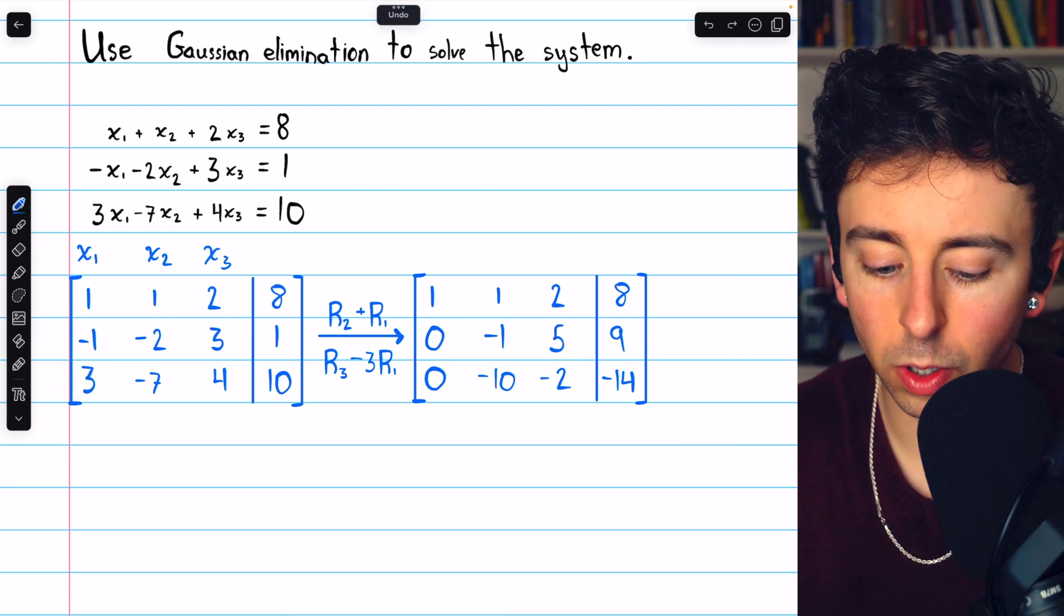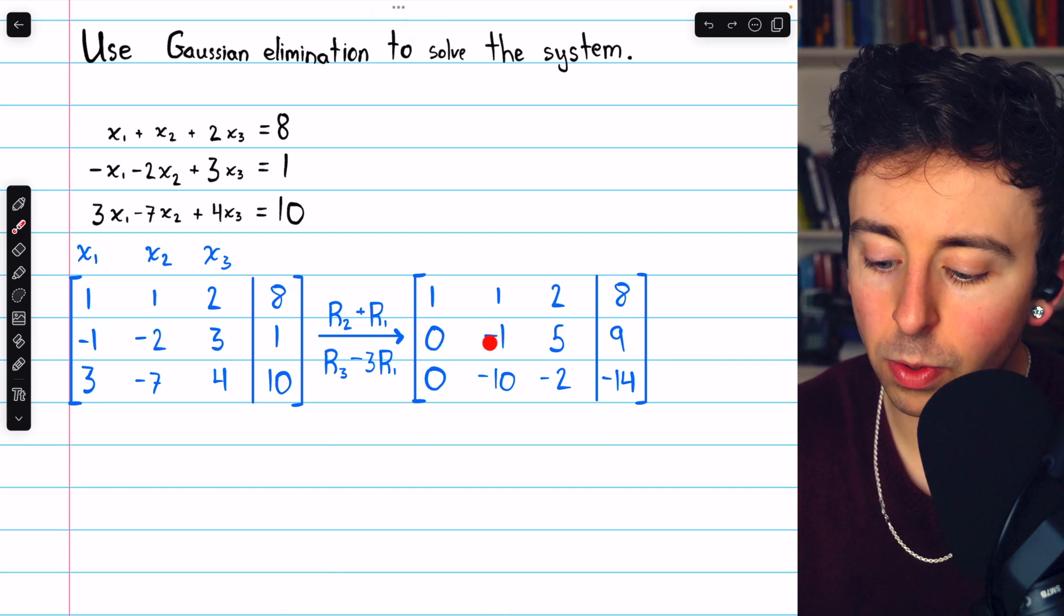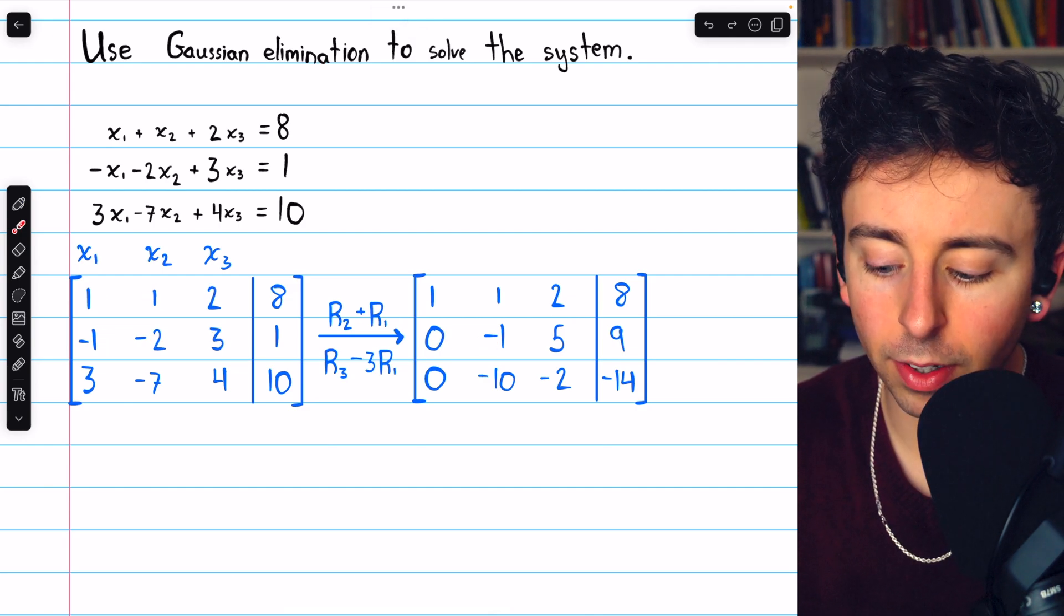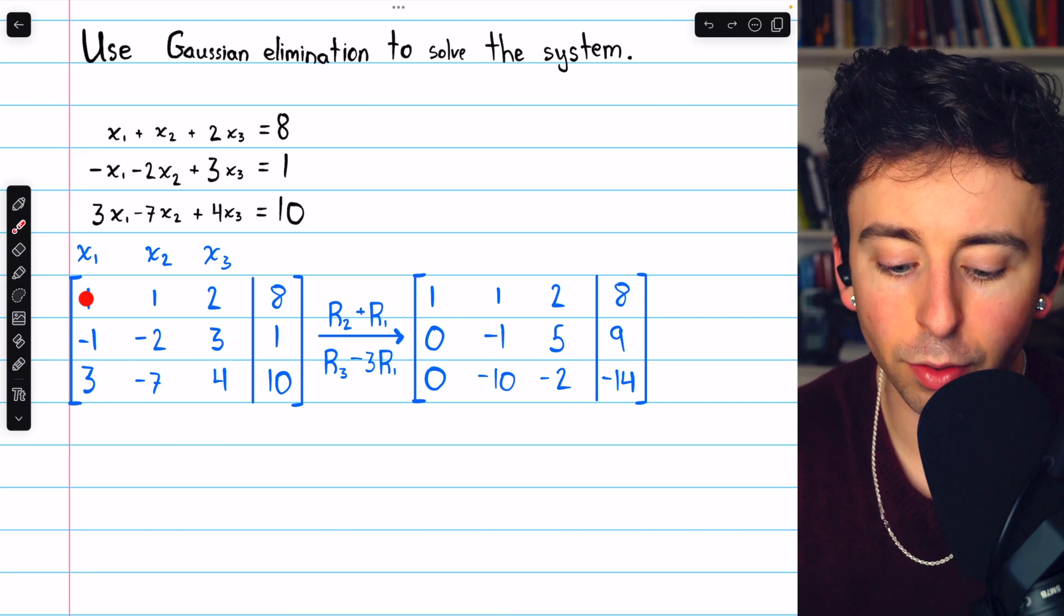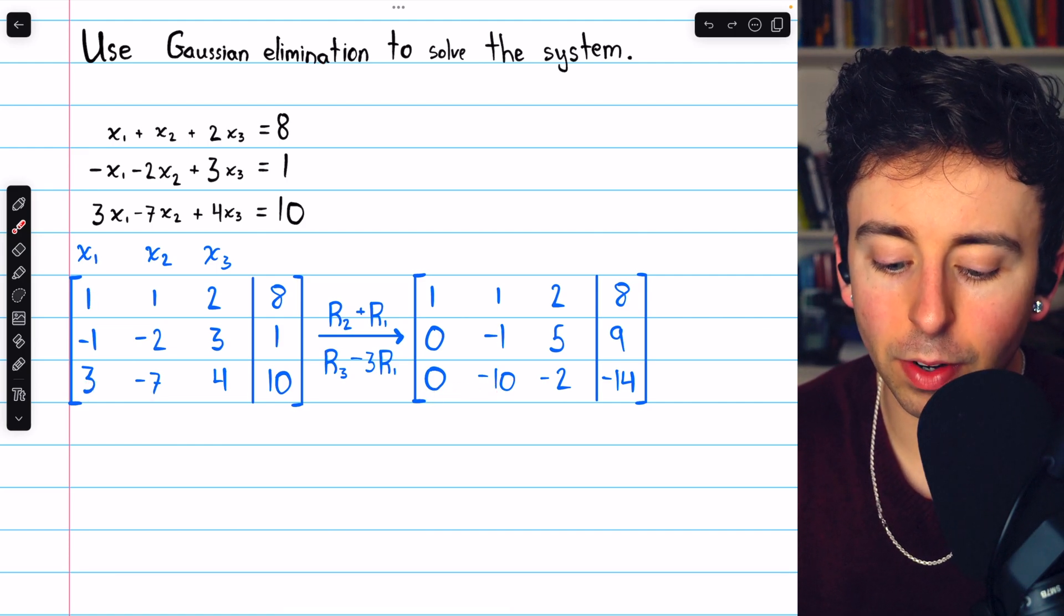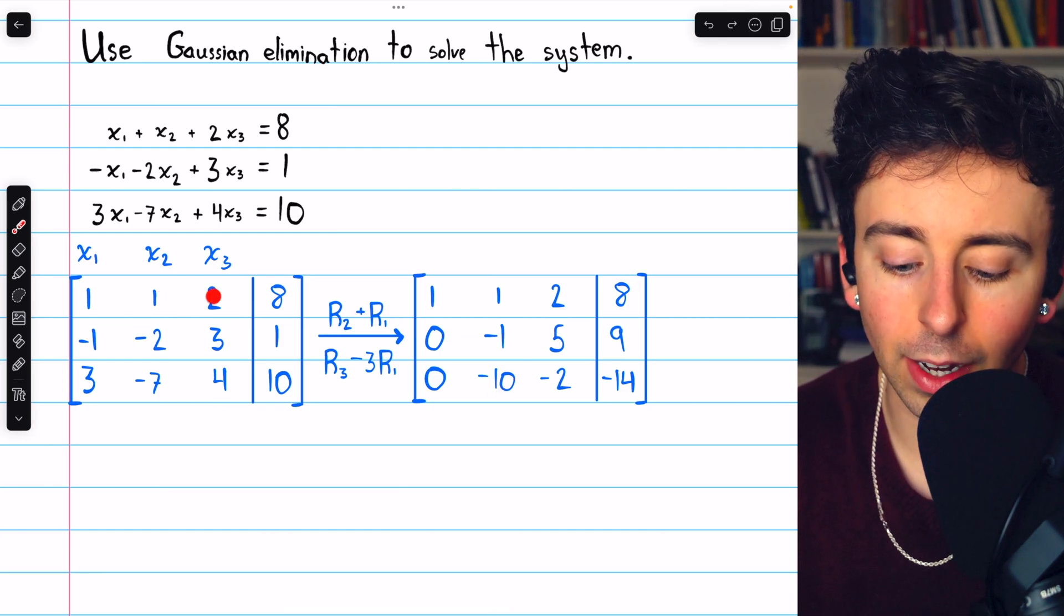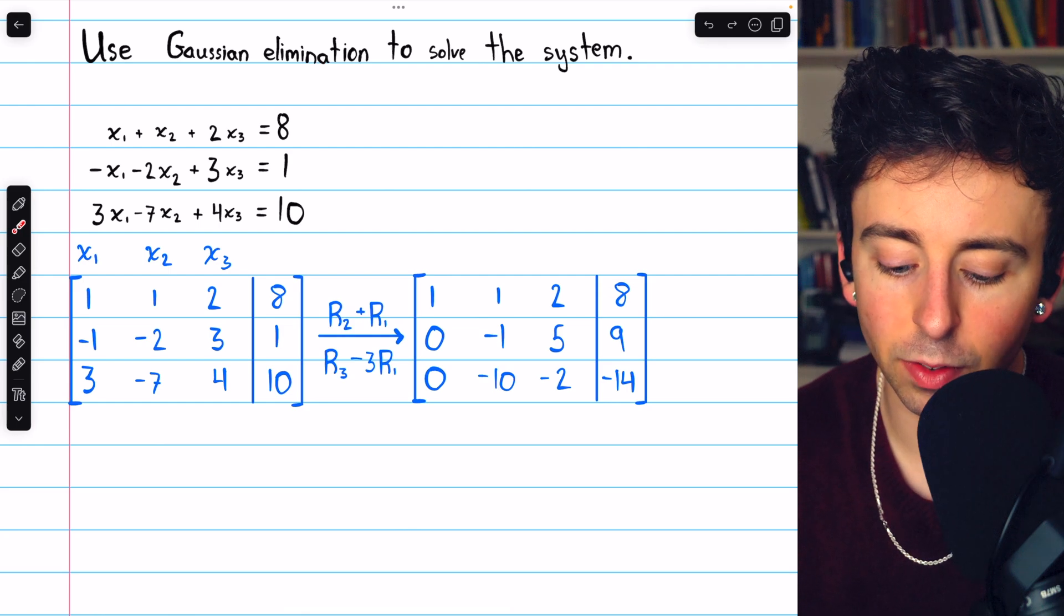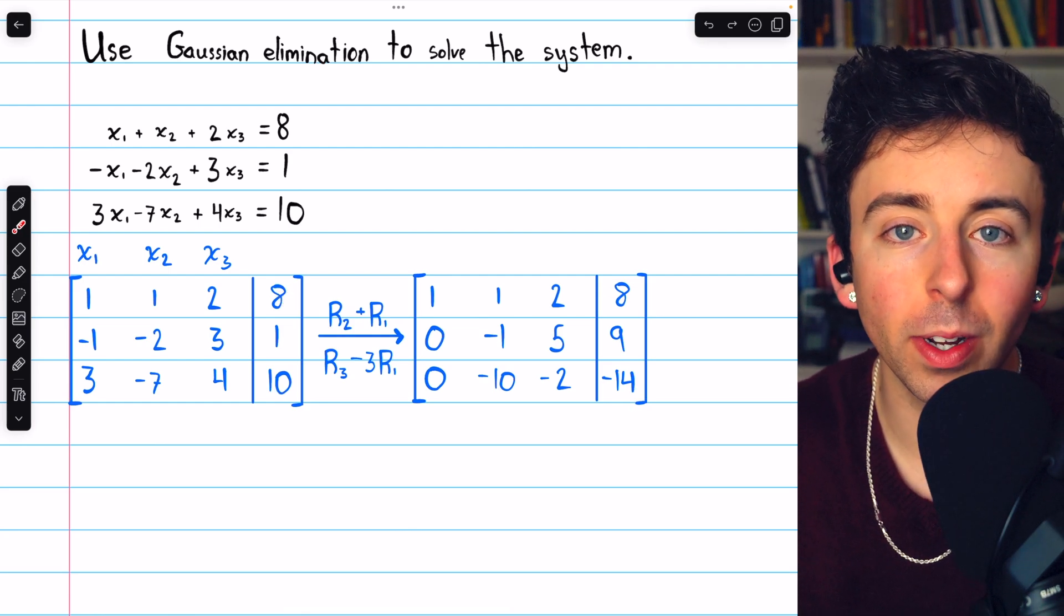So in row two we have negative one plus one which is zero, negative two plus one which is negative one, three plus two which is five, and one plus eight which is nine. In row three we have three minus three times one which is zero, then we have negative seven minus three times one which is negative ten, then four minus three times two which is negative two, and then ten minus three times eight, so negative fourteen.